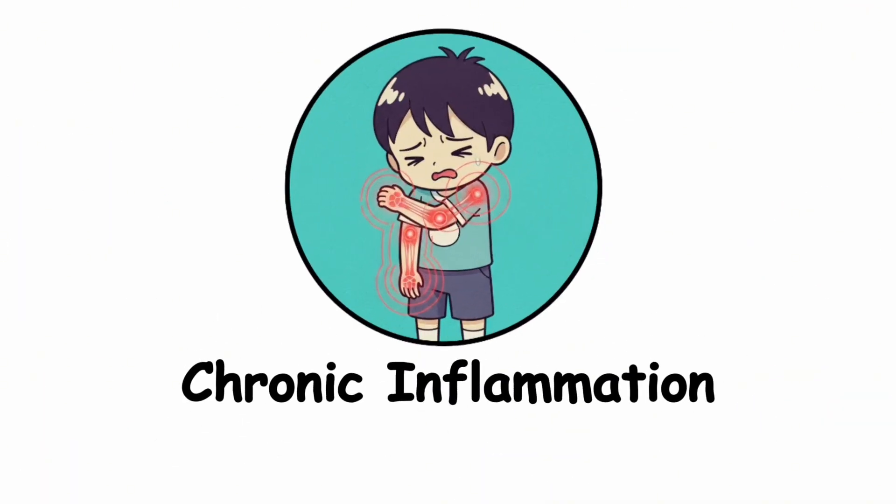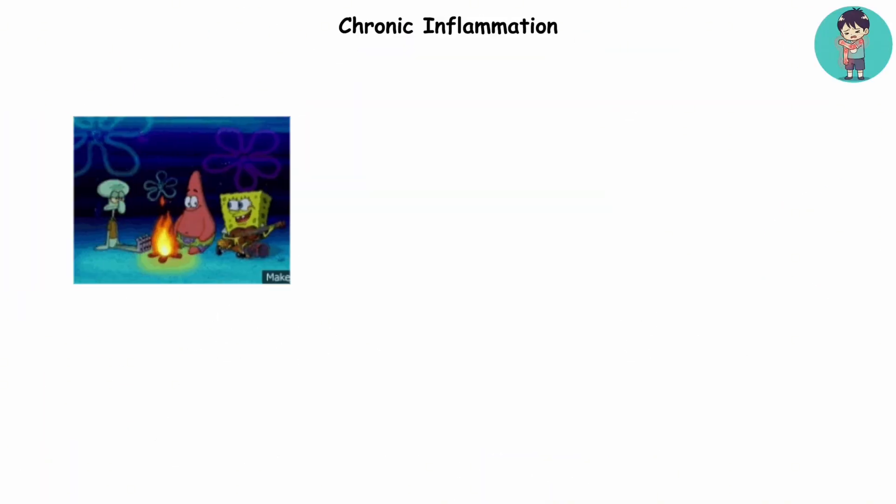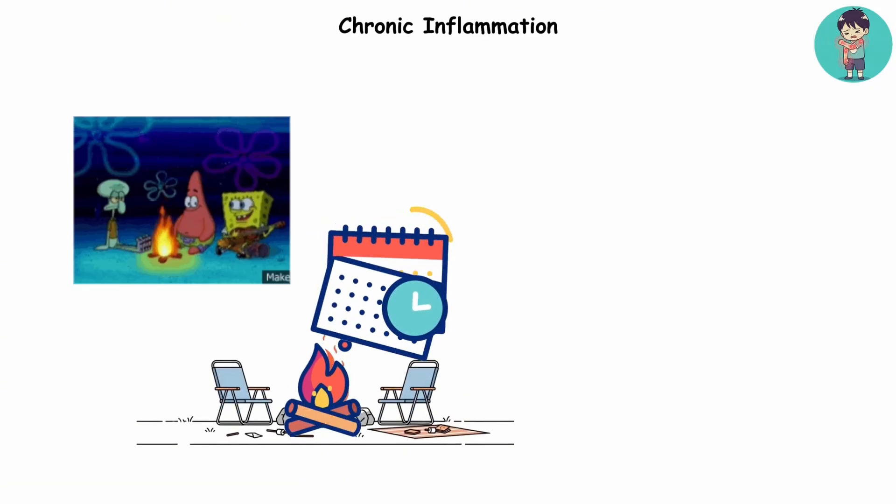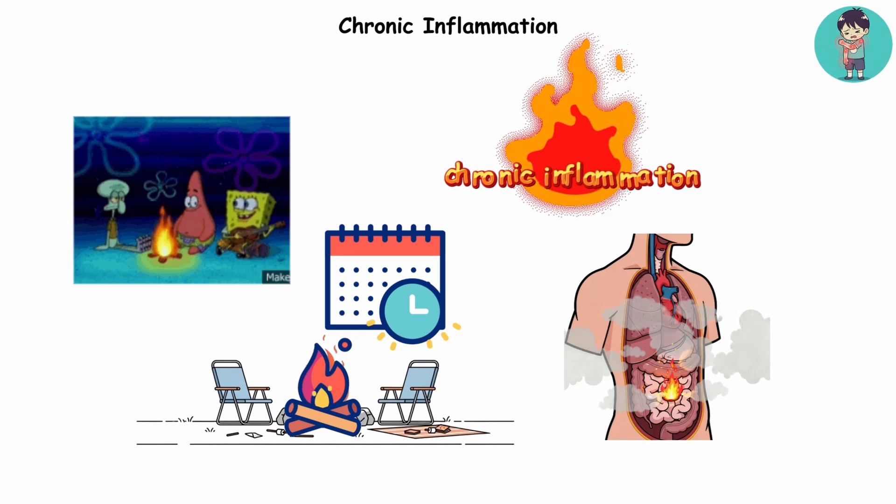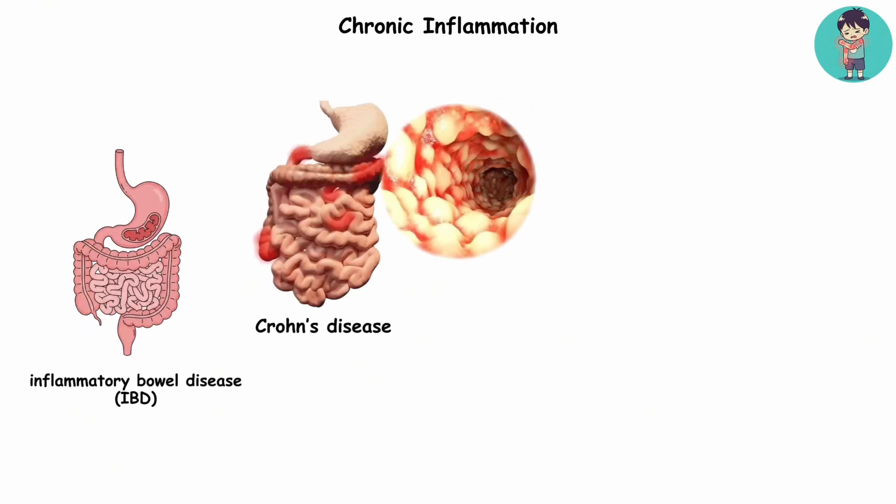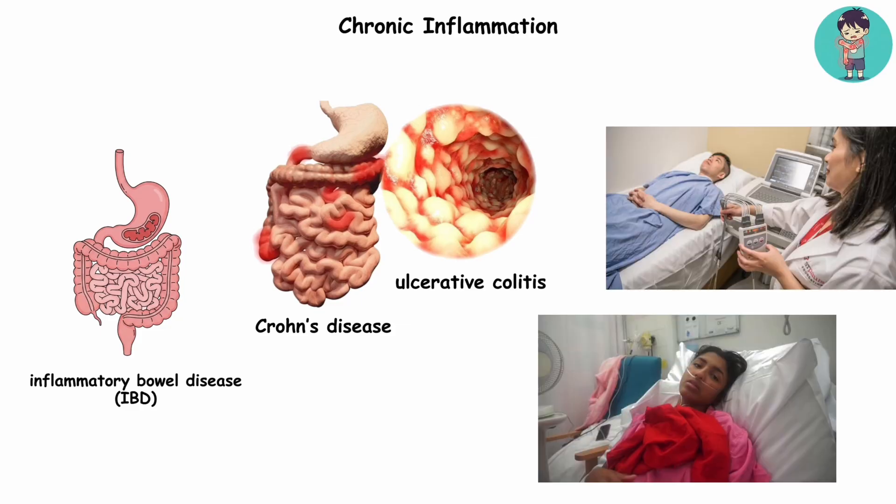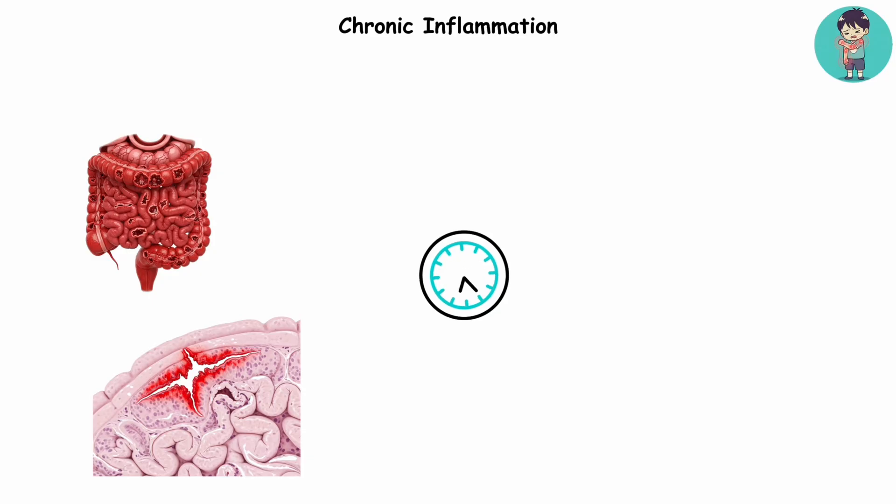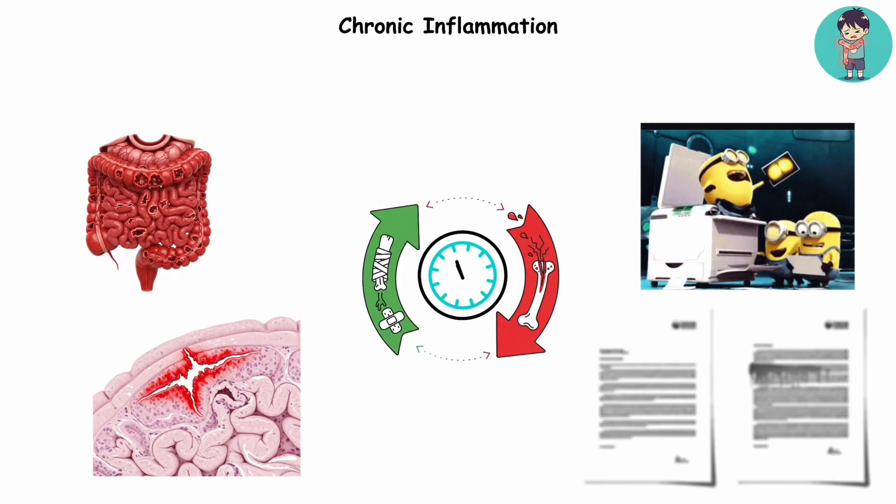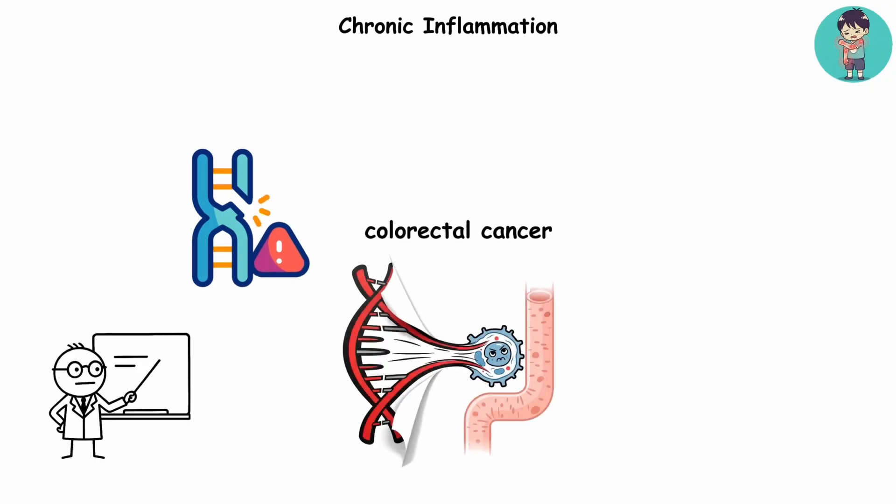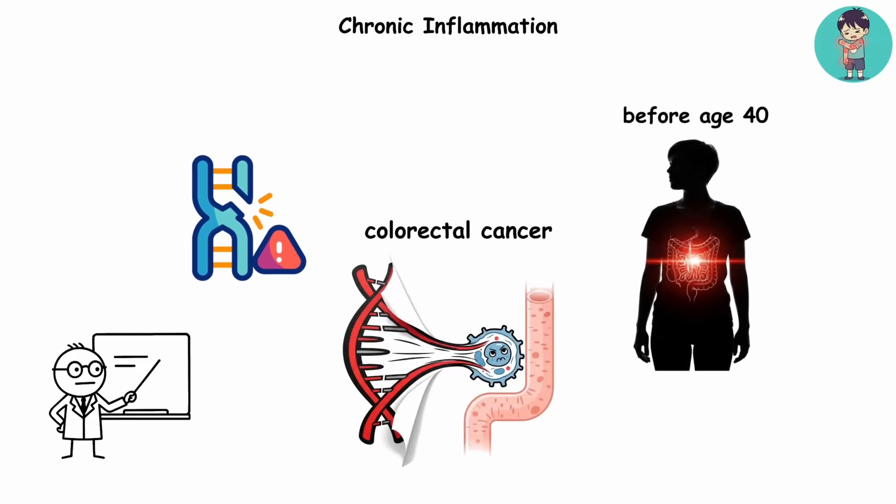Chronic inflammation. Imagine a tiny campfire in your backyard. Now imagine you never put it out. It just keeps smoldering, day after day. That's what chronic inflammation does inside your body. Conditions like inflammatory bowel disease, including Crohn's disease and ulcerative colitis, are striking more teens and young adults than ever. These diseases keep your digestive tract inflamed, and over time, that constant injury and repair cycle is like making endless photocopies of a blurry document. Eventually, mutations creep in, raising the risk of colorectal cancer, sometimes even before age 40.